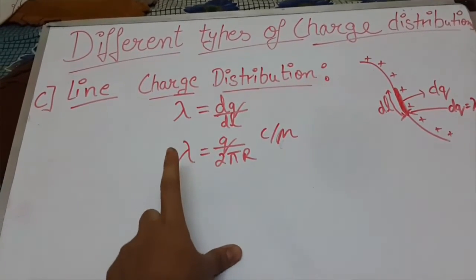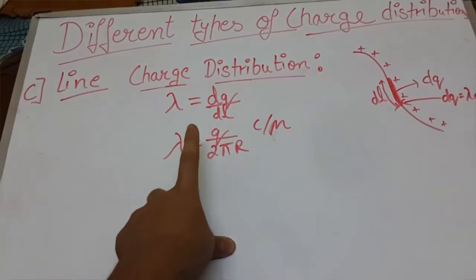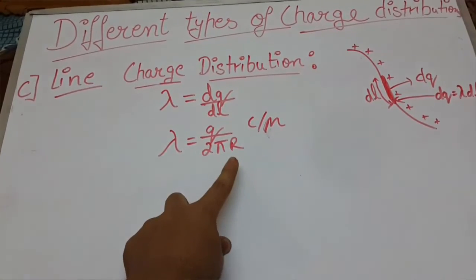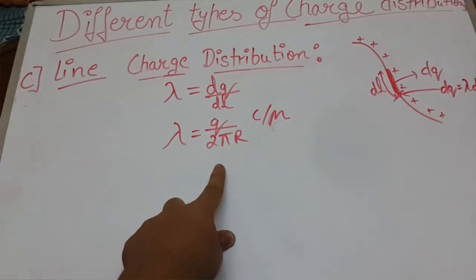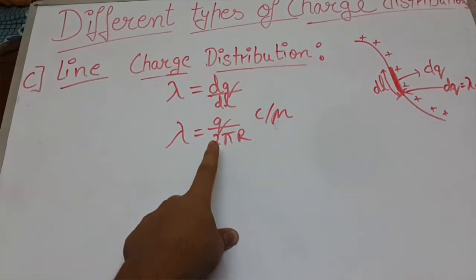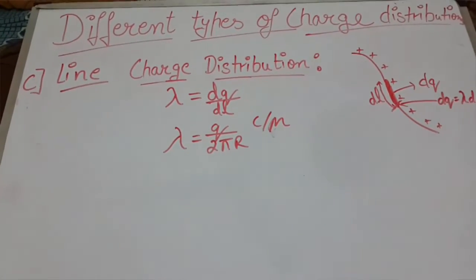Here lambda is denoted as line charge density which is equal to dq upon dl. We know that the length of a line or a sphere or you can say circle is equal to 2 pi r. So by putting the value here we can get lambda equals to q upon 2 pi r coulomb per meter. So thank you guys.